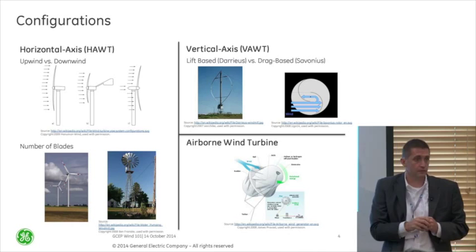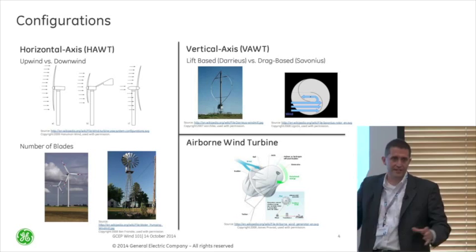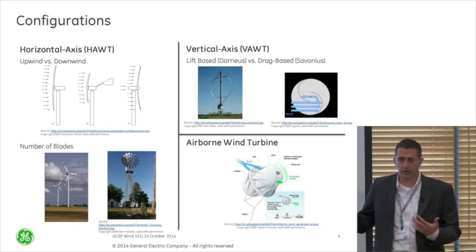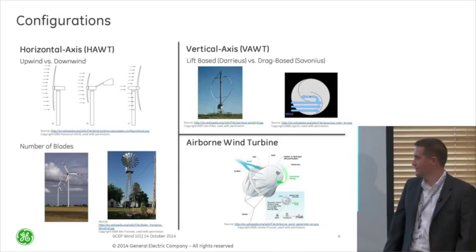We'll go through why we're at three blades when we look at CP. There are certainly lots of variations — I've seen wind turbines with one blade, two blades, three blades. You can go up to many blades, like those you see in the Midwest used for pumping water with lots and lots of blades. So there are a lot of different configurations.